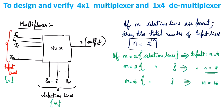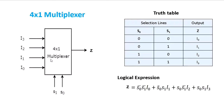For example, if m = 3, there are three selection lines, then the number of inputs is 8. Similarly, if m = 4, the selection line count is 4, then the number of inputs will be 16.